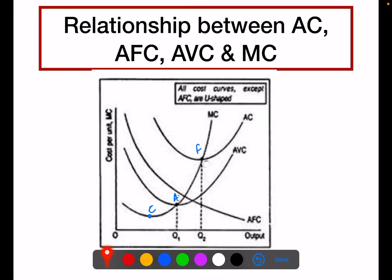Good morning everyone. Today's topic is the relationship between AC, AFC, AVC and MC. In the previous lecture, we studied the relationship between the average cost curve, average fixed cost and average variable curve. Today we are going to include the marginal cost curve as well.